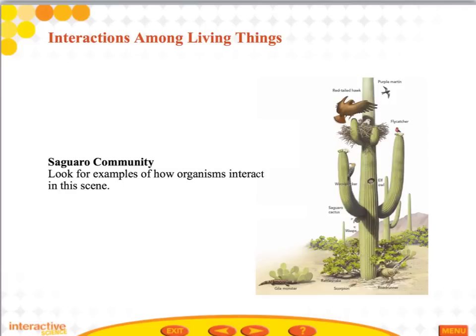Imagine this scene: as day breaks, a sound comes from a nest tucked in a saguaro cactus — two young red-tailed hawks preparing to fly. Farther down the stem, a tiny elf owl peeks out of its hole. A rattlesnake slithers around the base looking for breakfast, spies a shrew, and strikes it with needle-like fangs — the shrew dies instantly. Each organism in this scene has unique characteristics that affect its ability to survive and reproduce. Take a moment to write down a few adaptations these organisms have and ways they interact with each other.